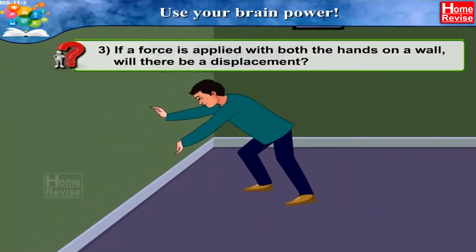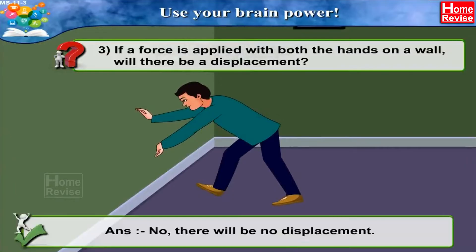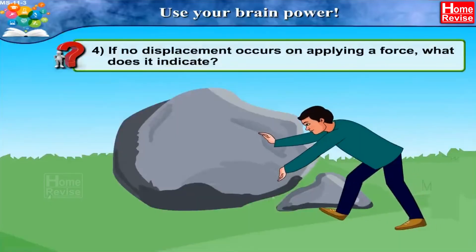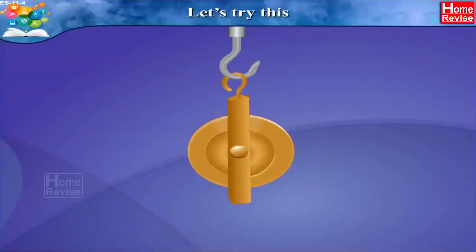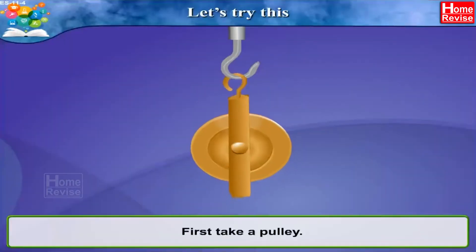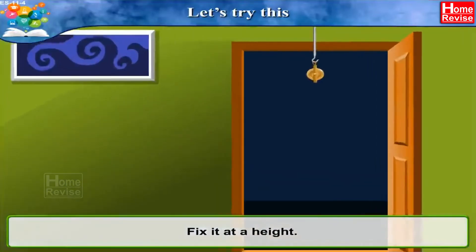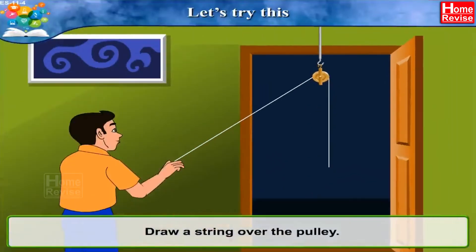Question 3: If a force is applied with both hands on a wall, will there be a displacement? Answer: No, there will be no displacement. Question 4: If no displacement occurs on applying a force, what does it indicate? Answer: If no displacement occurs on applying a force, then it indicates that no work is done.